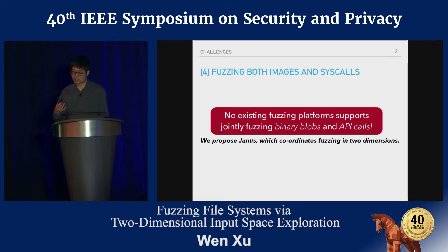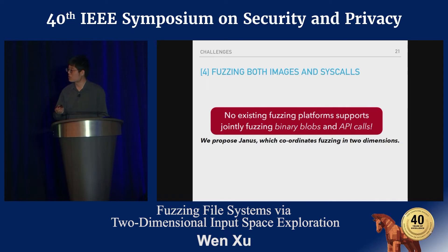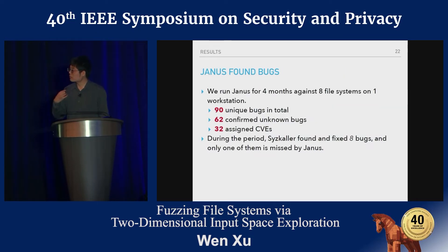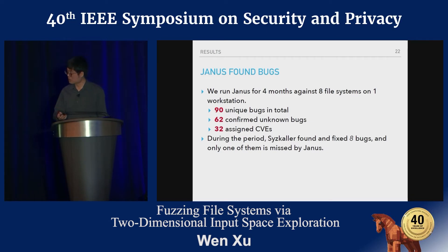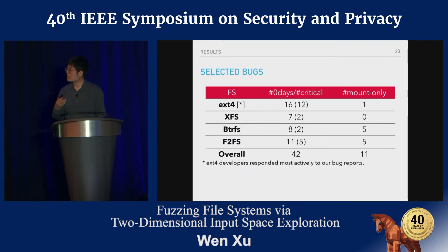The last challenge is that no existing tools can fuzz both the binary blob and operations simultaneously — which are in fact the two-dimensional inputs for a file system. So we propose Janus, which achieves this. We ran Janus for four months against eight file systems and found 19 unique bugs, receiving 32 CVEs. During this period, syzkaller found and fixed only eight bugs, and only one of them was missed by Janus.